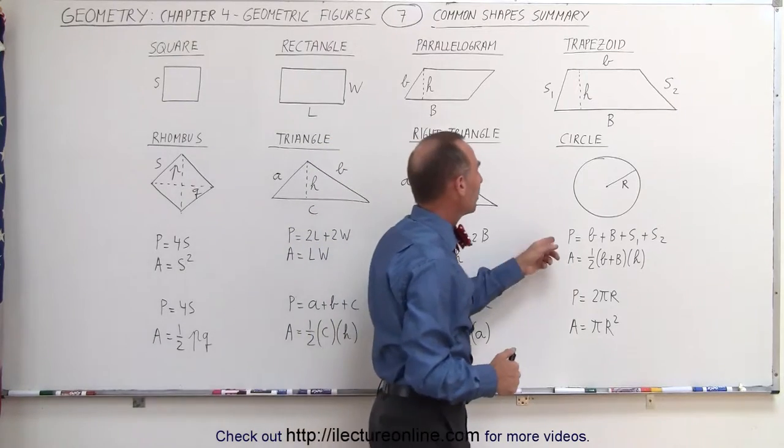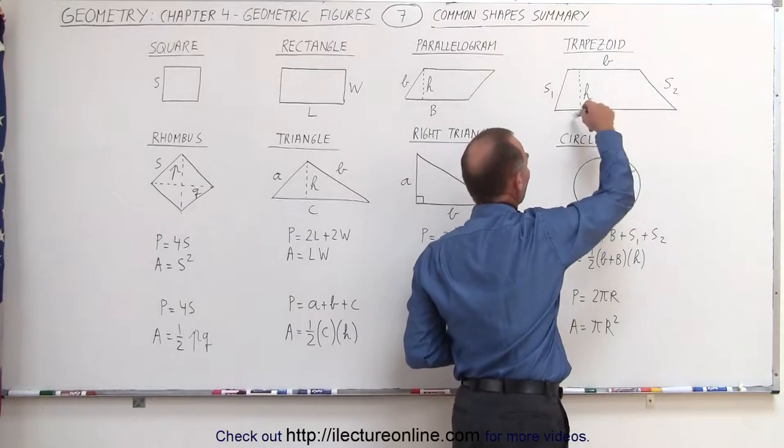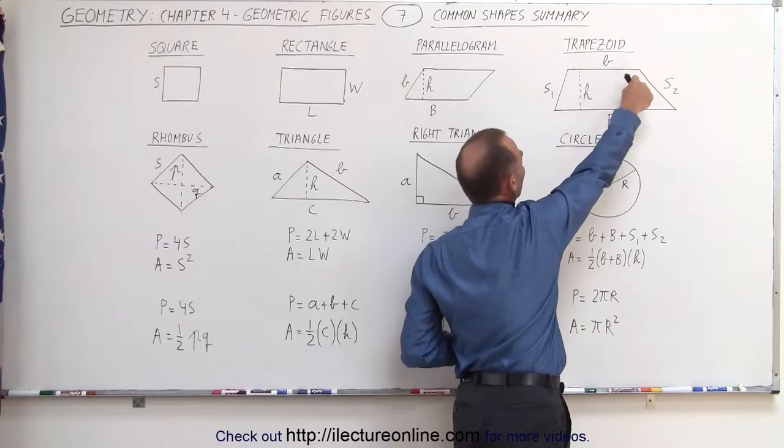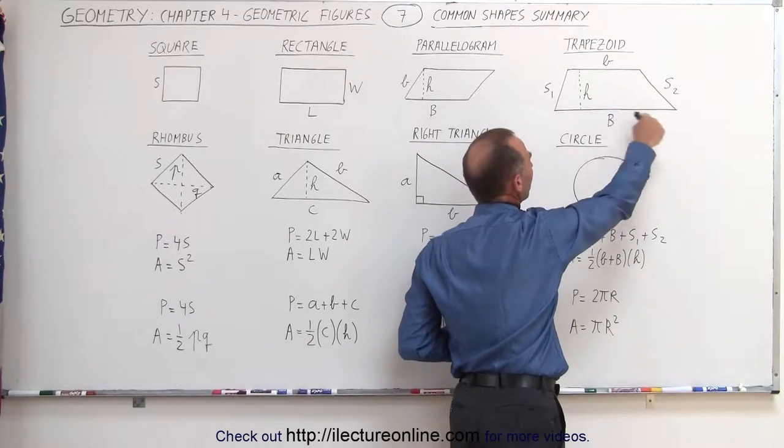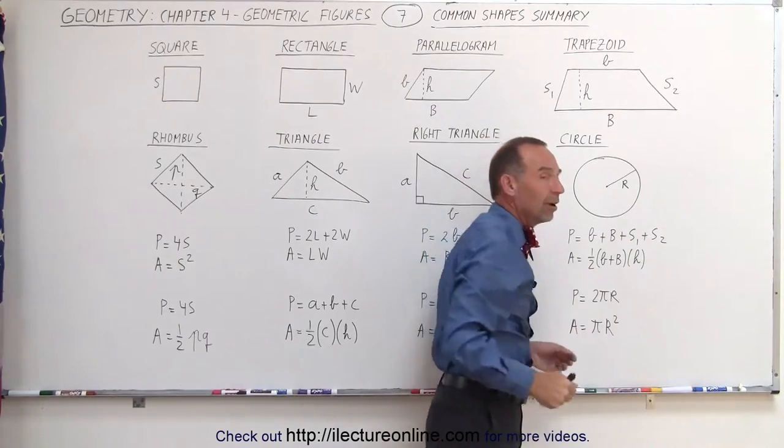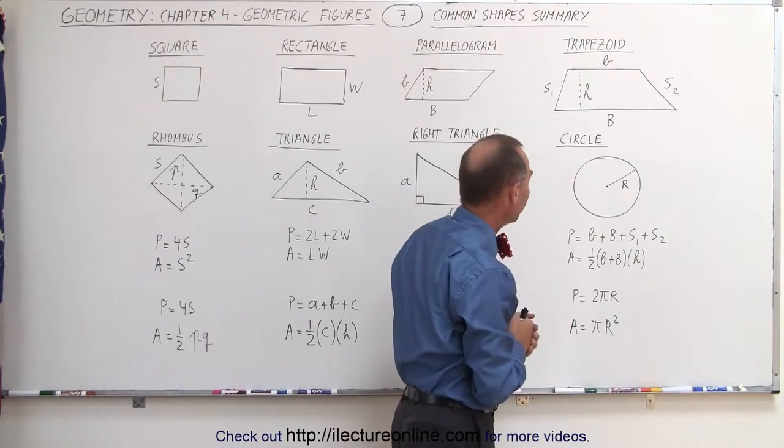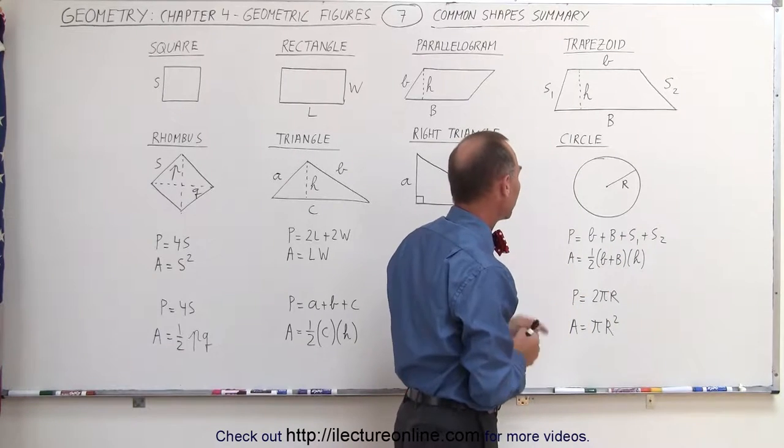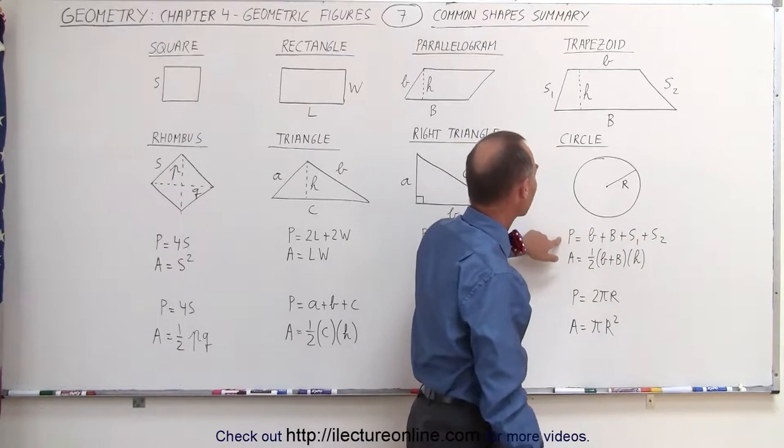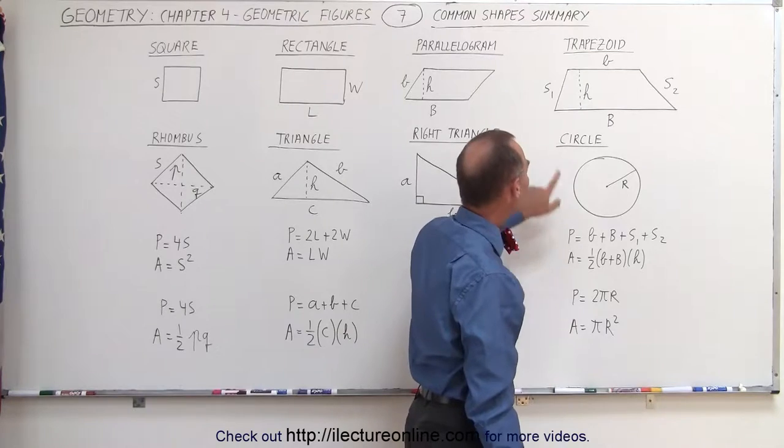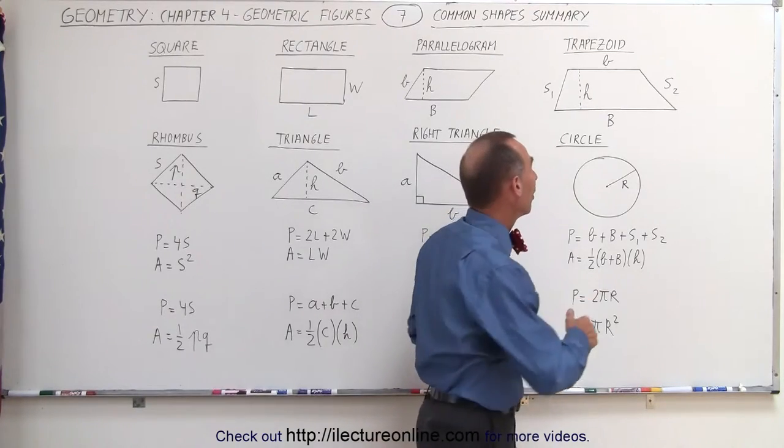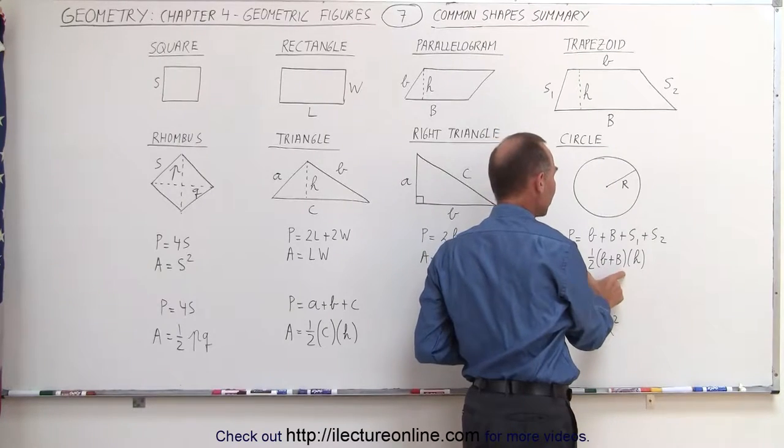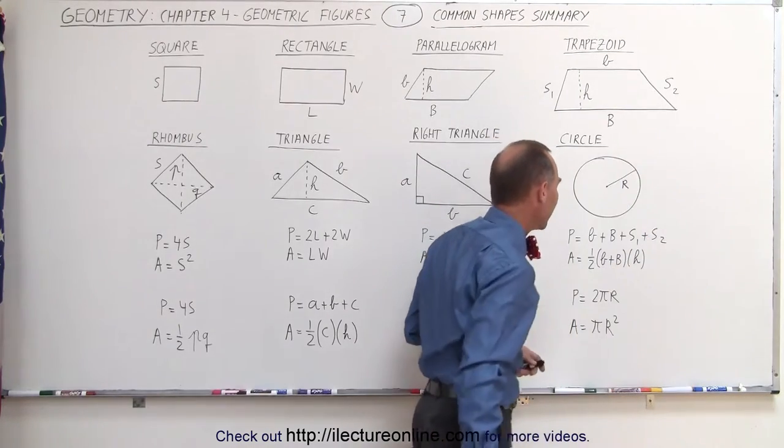For the trapezoid, the perimeter is simply the sum of the four sides, so it would be small b plus big B. Small b is used for the small side, big B is used for the big side, where the sides are opposite and parallel to one another. S1 and S2 are the two sides that are not parallel to one another, so it's simply the sum of all four sides for the perimeter. The area is one-half the average length of big B and small b, that would be one-half b plus B, that's the average length, times the height for the area.